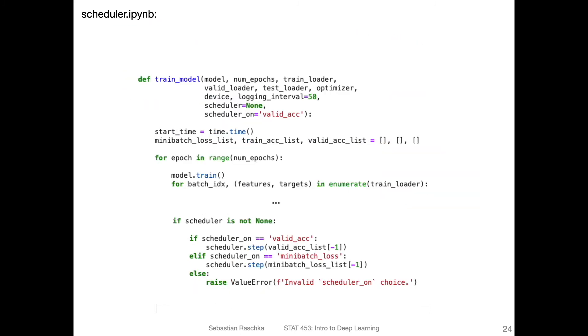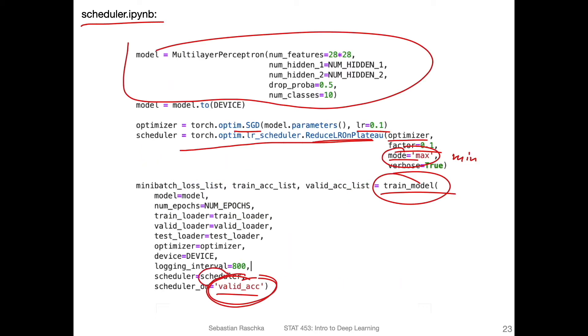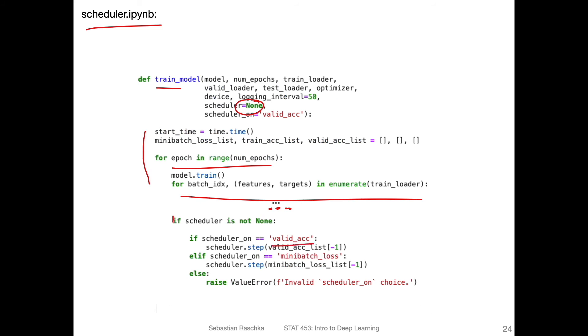All right, so here are the relevant parts from this train_model function. So here I zoomed in. Again, you can find it in the GitHub repository. So essentially, we have the loop over the epochs, then the loop over the mini batches here. I just left out all the code because it would be too long otherwise. And then I'm just saying if we use a scheduler, so this can be by default none, but we can of course provide the scheduler.